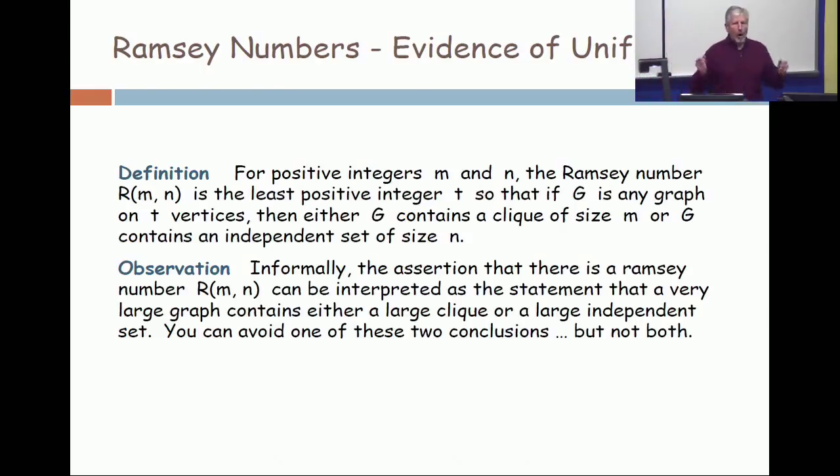The statement here is if you have a sufficiently big graph, you cannot avoid local regularity which will be large, relatively large. So having complete chaos in a big graph is impossible. Locally you will have a high degree of regularity. Either you will have a large clique or a large independent set.